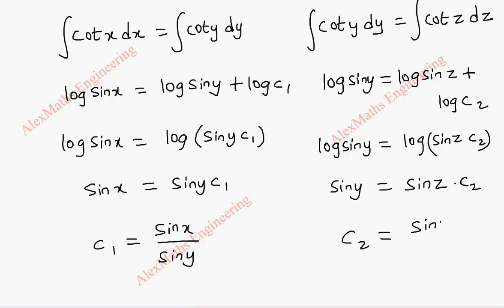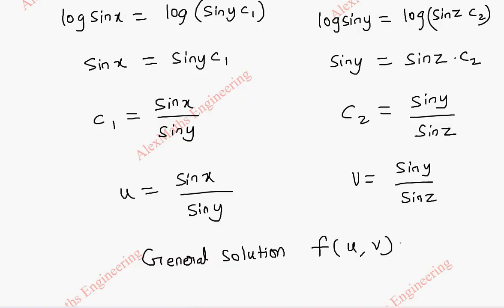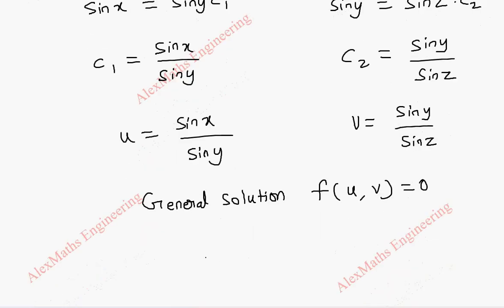So we got c1 and c2, which is u and v. u is sin x by sin y, and v is sin y by sin z. Now, using this, we can write the general solution, which is f of u, v equal to 0. And hence, f of sin x by sin y, sin y by sin z equal to 0.